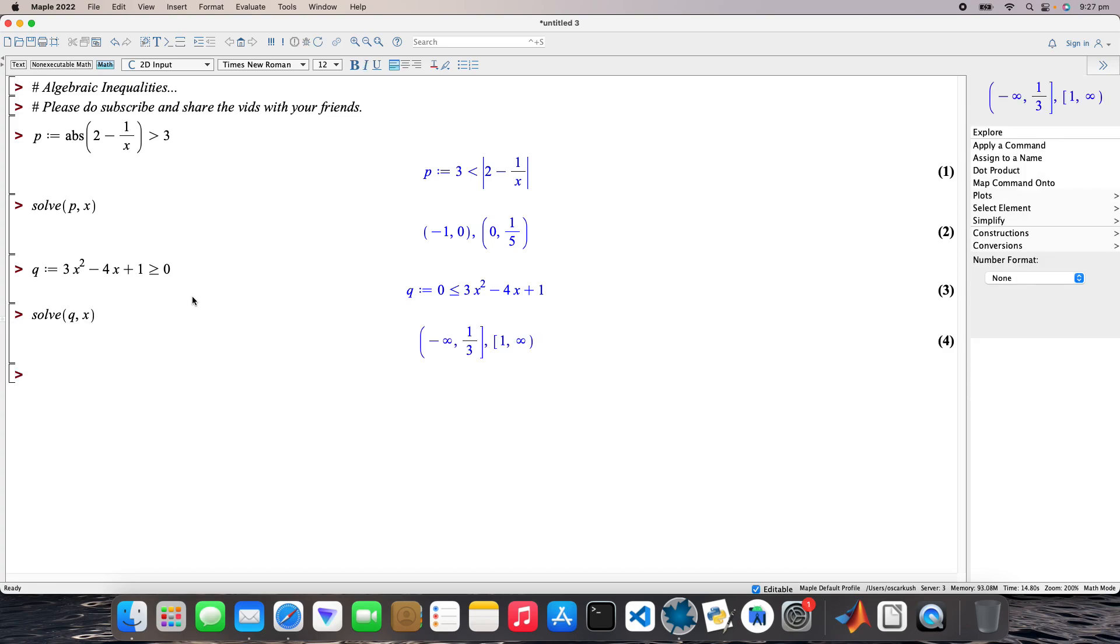So minus infinity, not part of the solution, it's not a real number. Hence we got this curvy bracket. One over three is a real number and also part of the solution, that's why we've got a square bracket here. It's the upper bound.